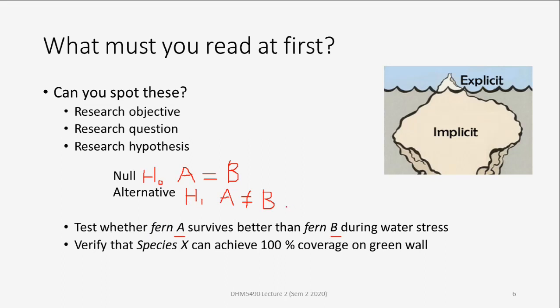This statement tells you the relationship between A and B. The researcher may conduct a planting experiment to reject H0 — the conclusion would be that A is not equal to B. Here, A is the survival of Fern A and B is the survival of Fern B. The target the researcher wants to achieve is that Fern A is better than Fern B in terms of drought tolerance.